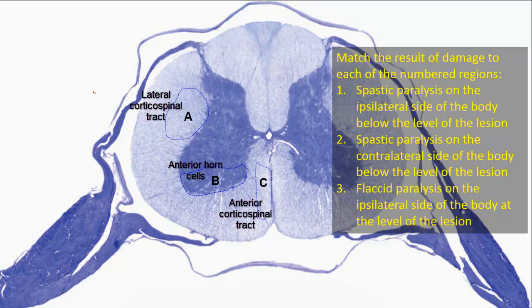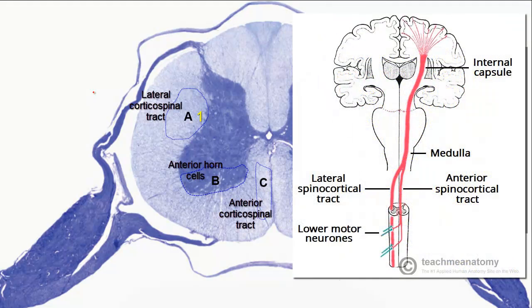Spastic paralysis results from an upper motor neuron lesion, so either A or C could be involved. For lesion one — ipsilateral spastic paralysis — this affects A, the lateral corticospinal tract. Fibers of the lateral corticospinal tract have already crossed at the medulla at the pyramidal decussation, so damage in the spinal cord results in an ipsilateral effect.